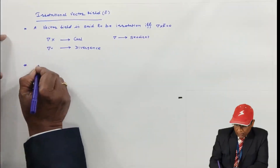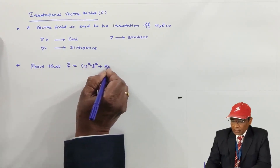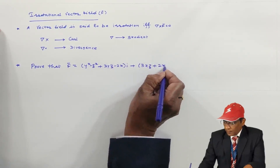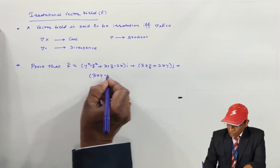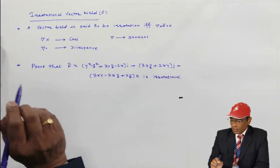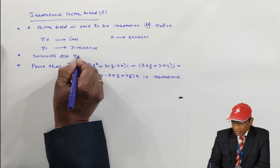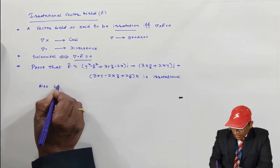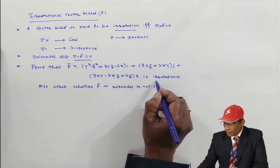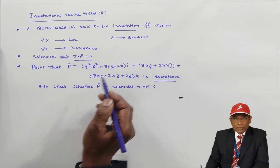Now we will discuss one problem. Prove that the vector field f̄ = (y² − z² + 3yz − 2x)i + (3xz + 2xy)j + (3xy − 2xz + 2z)k is irrotational. We will also check whether f̄ is solenoidal or not. A field is solenoidal if the divergence of that field is zero.